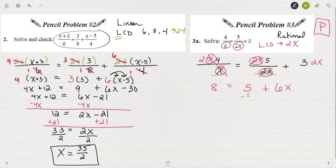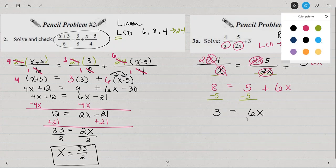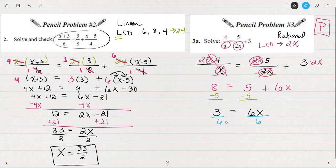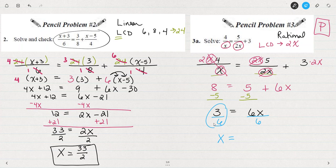Subtract 5 from both sides so that I can isolate x — so 8 minus 5 is 3, and 3 equals 6x. Divide both sides by 6, and I get x equals 3 over 6. Now 3 over 6 I don't need to divide, but I do need to reduce it. 3 over 6 reduces to 1 half. So for 3a, we get x equals 1 half.